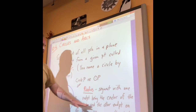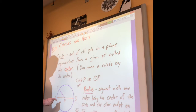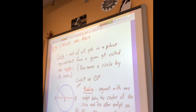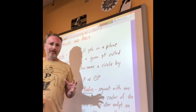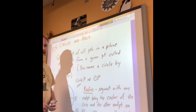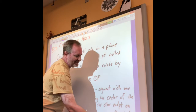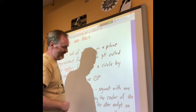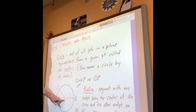A radius is a segment with one endpoint being the center of the circle and the other endpoint on the circle. There are actually three radii in this picture: P to C, P to B, and P to A. You can say 'radiuses' or, if you want to be like the cool kids, you say 'radii' - R-A-D-I-I - one of those few words in English with a double I. So circle P has three radii: PC, PA, and PB.